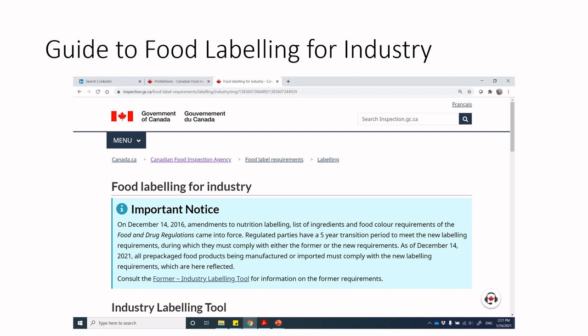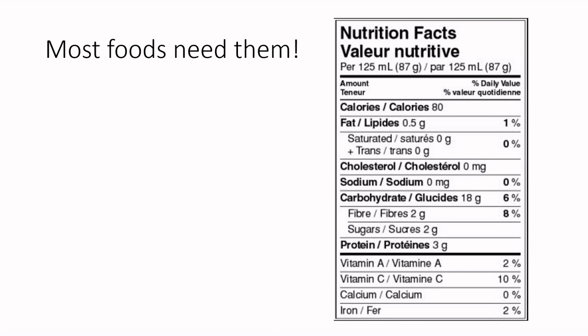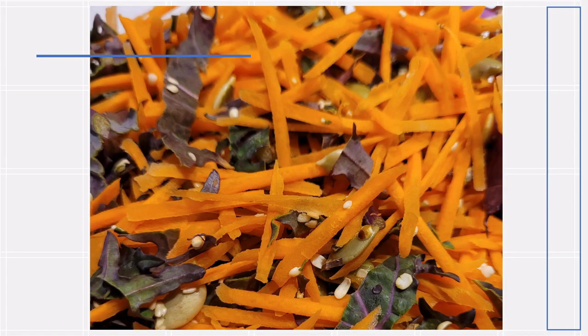I've already pre-loaded Splashtop so we're not sitting around waiting for it to load. Just a reminder: most foods need nutrition facts tables, but some foods are exempt — fresh fruits and vegetables are exempt. Today we're going to be making some carrot salad, and because it's a composed product with multiple fruits and vegetables and other things in it, it's got to have a nutrition facts table. I wanted to show you some additional features in ESHA.